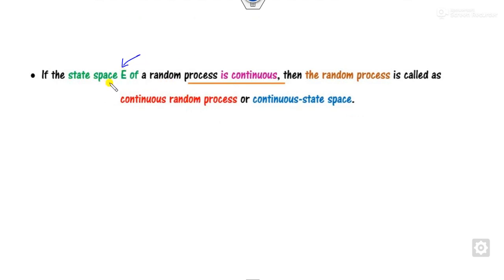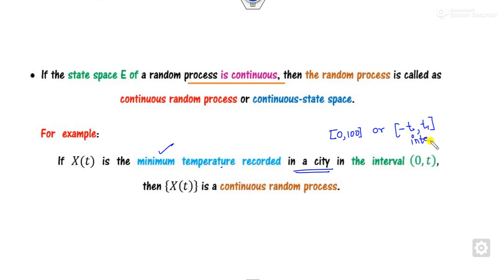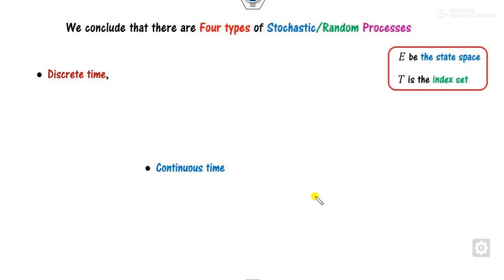If the random state E is continuous, the process is called the continuous random process or continuous state space. For example, the minimum temperature recorded in a city ranges over an interval such as [0, 100] or [−t₁, +t₁], which is always in interval form. Therefore, this is a continuous random process.